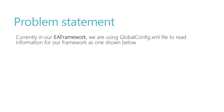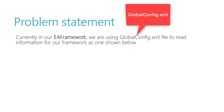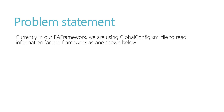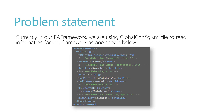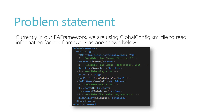Currently in our EA Framework we are using the globalconfig.xml file to read information for our framework, as shown below. We have a config for each and every attribute of our framework — something like application under test, browser, test type, islog, logpath, build number, reporting username, and technology. These are things we use across our framework.